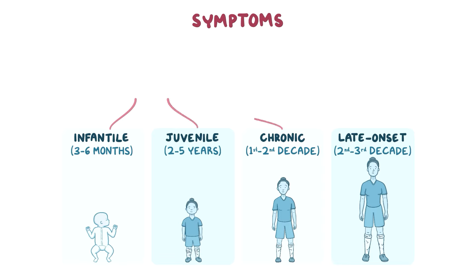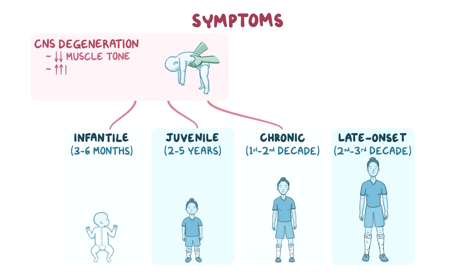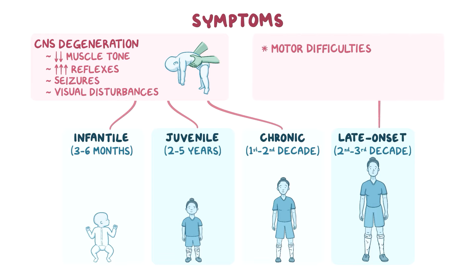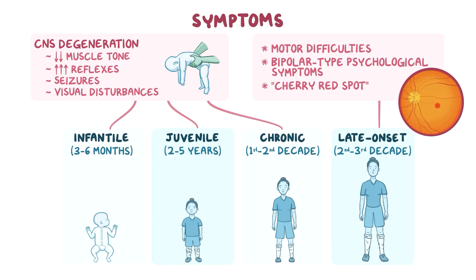Common signs for the first three forms are signs of CNS degeneration, like decreased muscle tone, abnormally increased reflexes, seizures, and visual disturbances. For adult onset, there may be motor difficulties and some adults may manifest bipolar-type psychological symptoms. Ophthalmologists may be the first to consider TSD by finding a cherry-red spot in the macula of the eye, which results from GM2 buildup in the retinal cells around the central macular area.